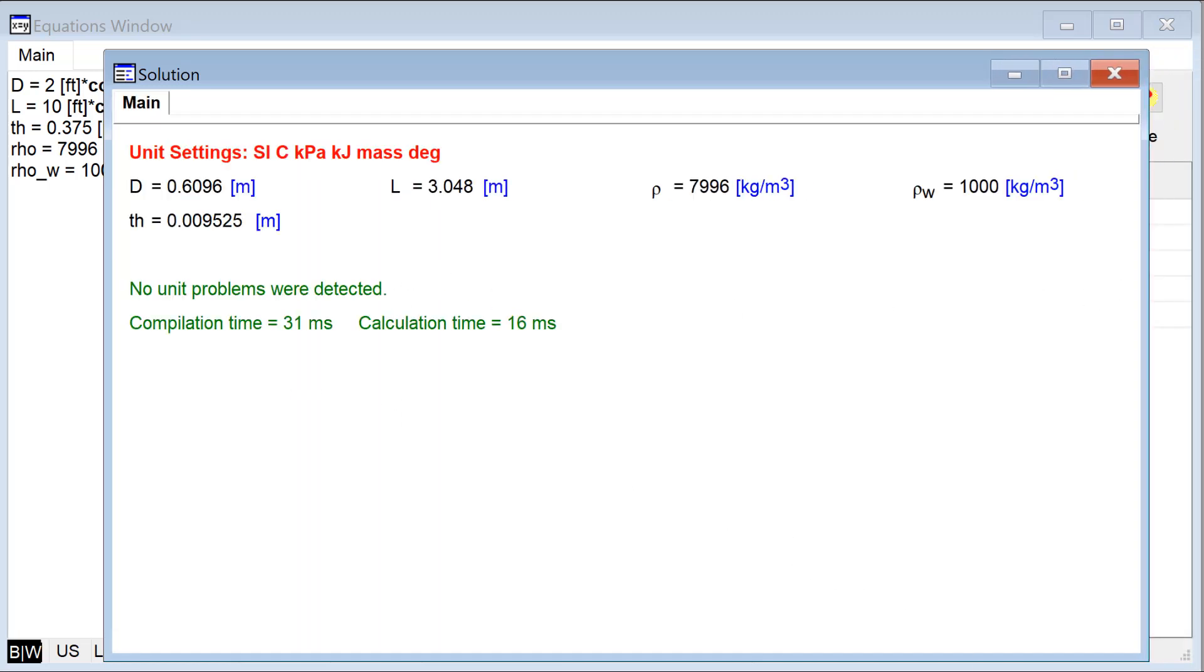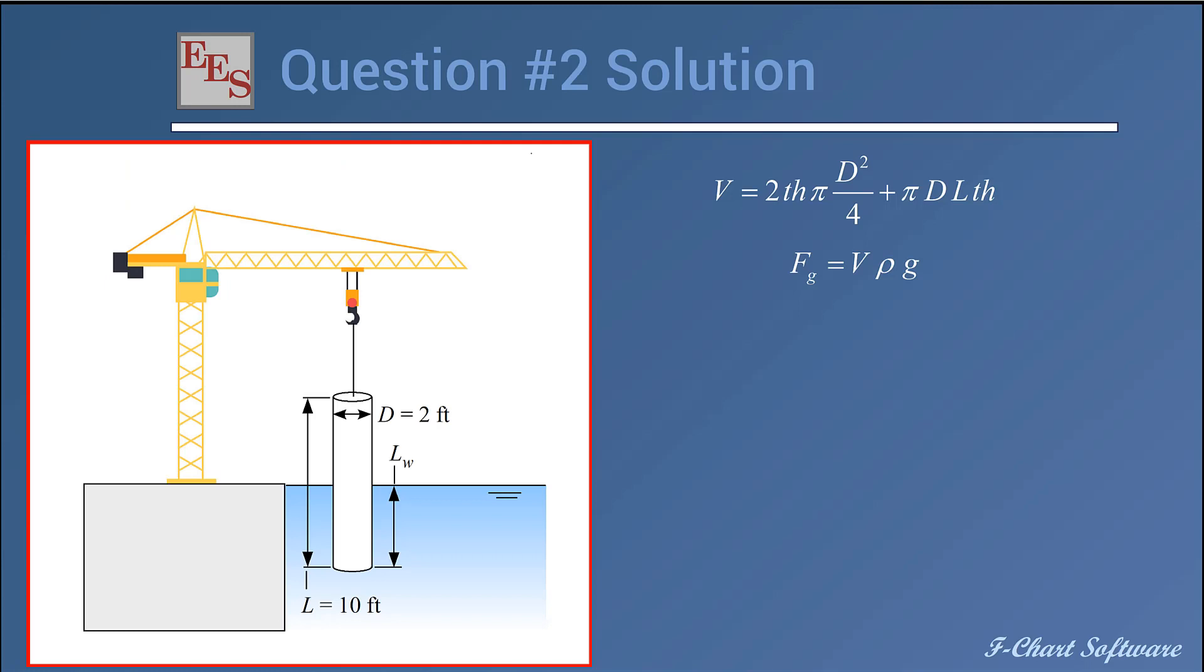Then I'll start to think about how I can come up with the set of equations I have to solve to solve this problem. One thing I'd like to figure out is the force of gravity associated with the cylinder. The volume of stainless steel is the volume of two end caps, so that's here. You can see the area of a disc multiplied by the thickness, and then this 2 is because there's a top and a bottom.